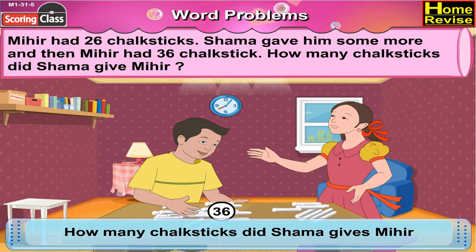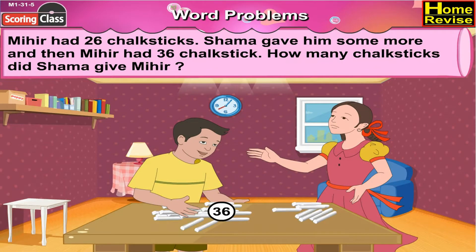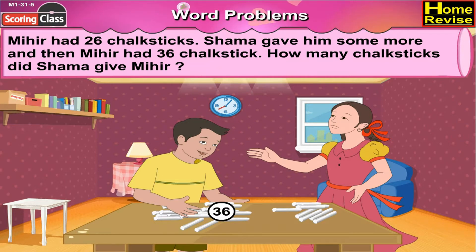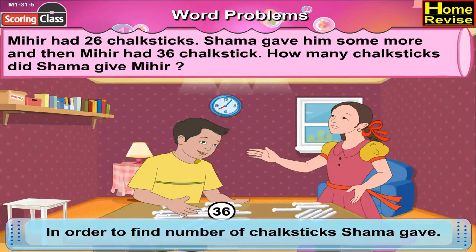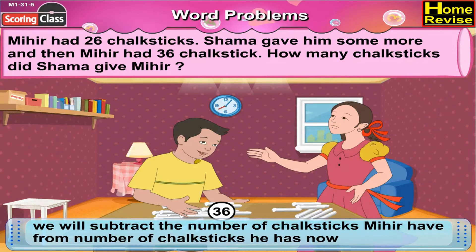Number of chalk sticks Mihir had: 26. After Shama gave Mihir chalk sticks, he had 36 chalk sticks. In order to find the number of chalk sticks Shama gave, we will subtract the number of chalk sticks Mihir had from the number of chalk sticks he has now.